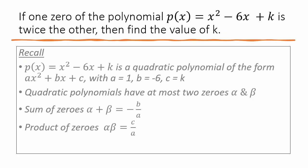To summarize: you should know that quadratic polynomials have at most two zeros, that the sum of zeros is −b/a, and that the product of zeros is c/a.